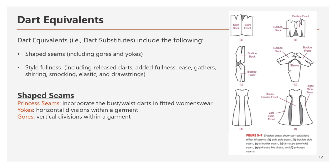Looking at different types of shaped seams, the princess seam incorporates the bust and waist darts in fitted women's wear. In figure 5.7, you can see the princess seam — the dress center front, side front, and the gray area of seams that add shape to the garment.